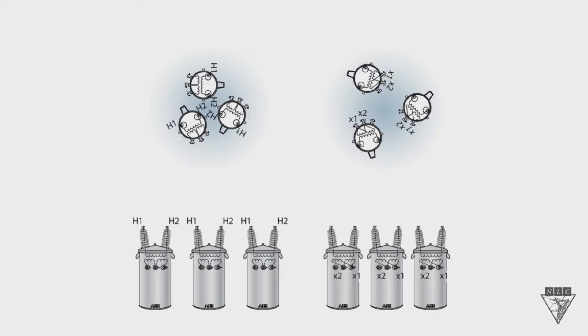So let's start with the primary side and let's tie our H2 bushings together. Now after you tie them together, sometimes they may or may not go to ground, depends on your secondary connection. But you tie the H2 bushings together.